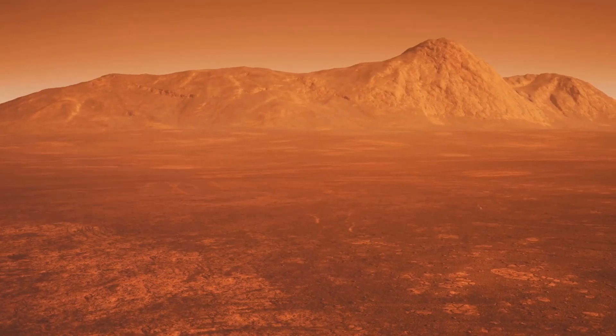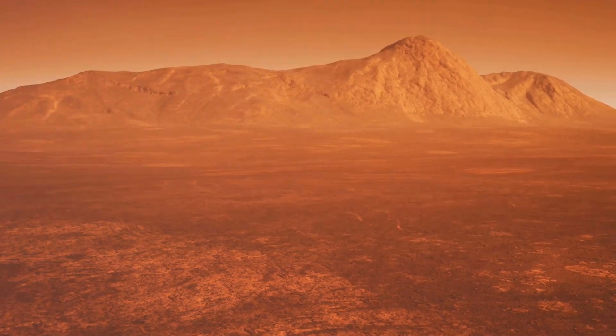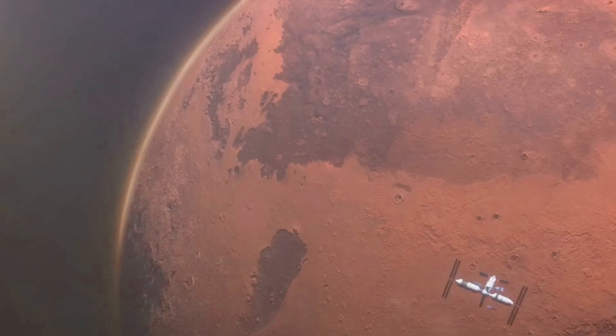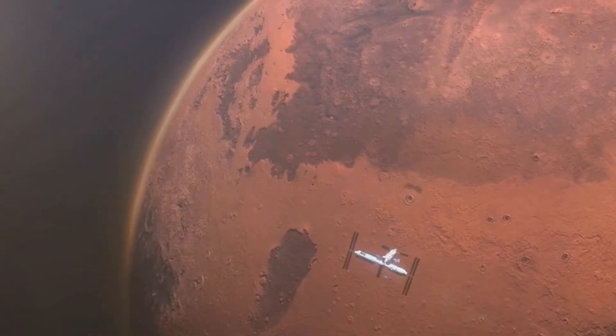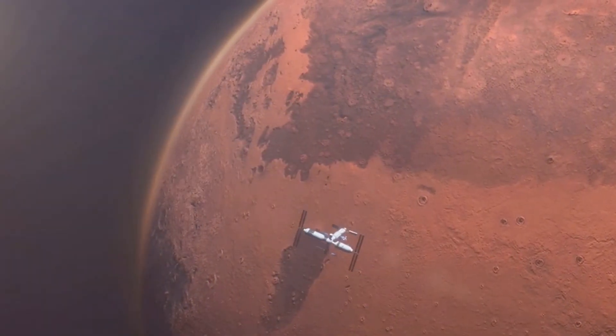Mars, our red neighbor, is a cold desert world. Known for its red hue, due to iron oxide, rust on its surface, Mars has the tallest volcano and the deepest, longest canyon in the solar system.